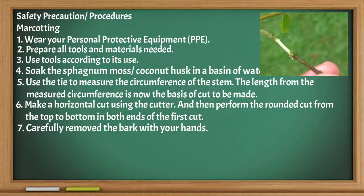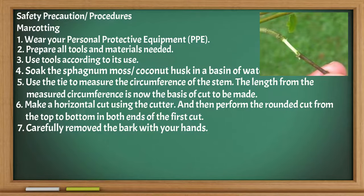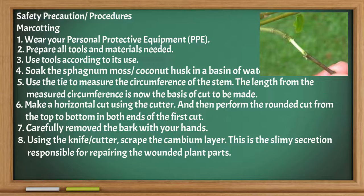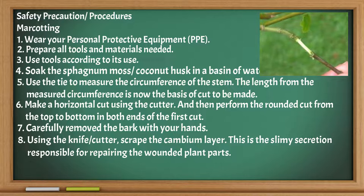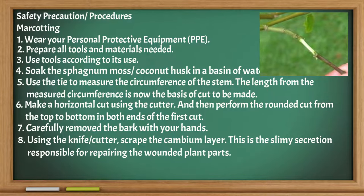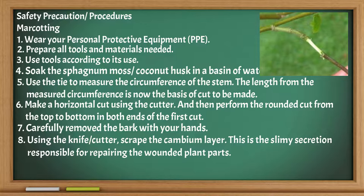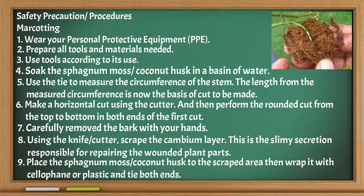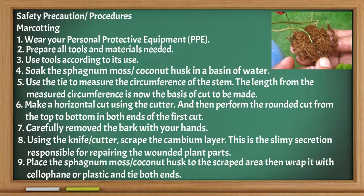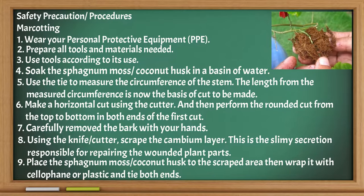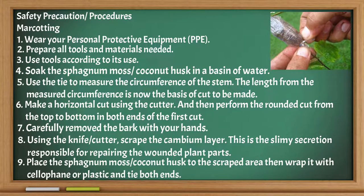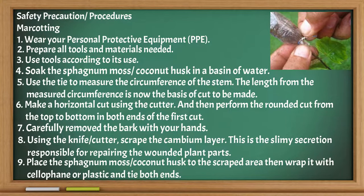Carefully remove the bark with your hands. Using the knife or cutter, scrape the cambium layer — this is the slimy secretion responsible for repairing wounded plant parts. Place the sphagnum moss or coconut husk on the scraped area, then wrap it with cellophane or plastic and tie both ends.